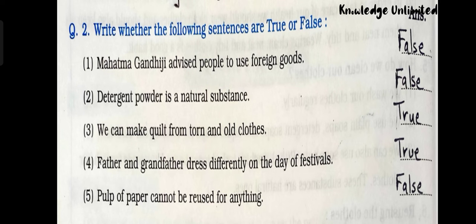Now let's see question number two: write whether the following sentences are true or false. Number one: Mahatma Gandhi advised people to use foreign goods — answer is false. Second one: detergent powder is a natural substance — answer is false. Third one: we can make a quilt from torn and old clothes — answer true. Fourth one: father and grandfather dress differently on the day of festivals — answer true. Fifth one: pulp of paper cannot be reused for anything — answer false.